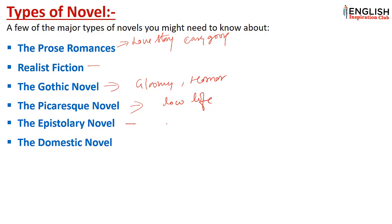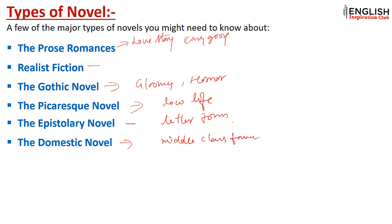The next type is the epistolary novel. Epistolary novels are written in letter form. Then there is the domestic novel, which is based on middle-class family life — their routines and daily life. These novels express the problems that arise in their daily lives. Jane Austen's novels are a good example of this type, written during the Romantic era.